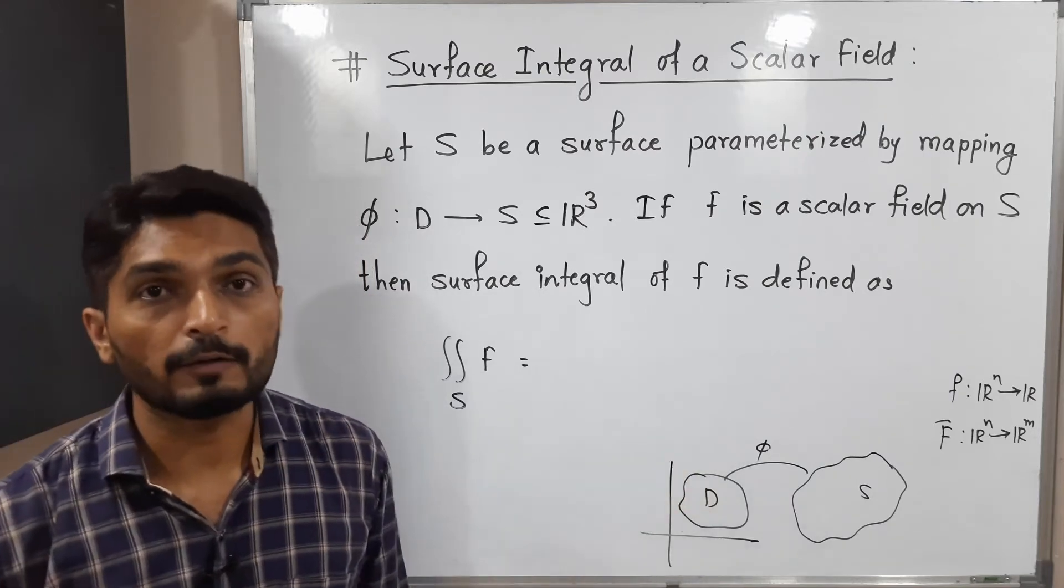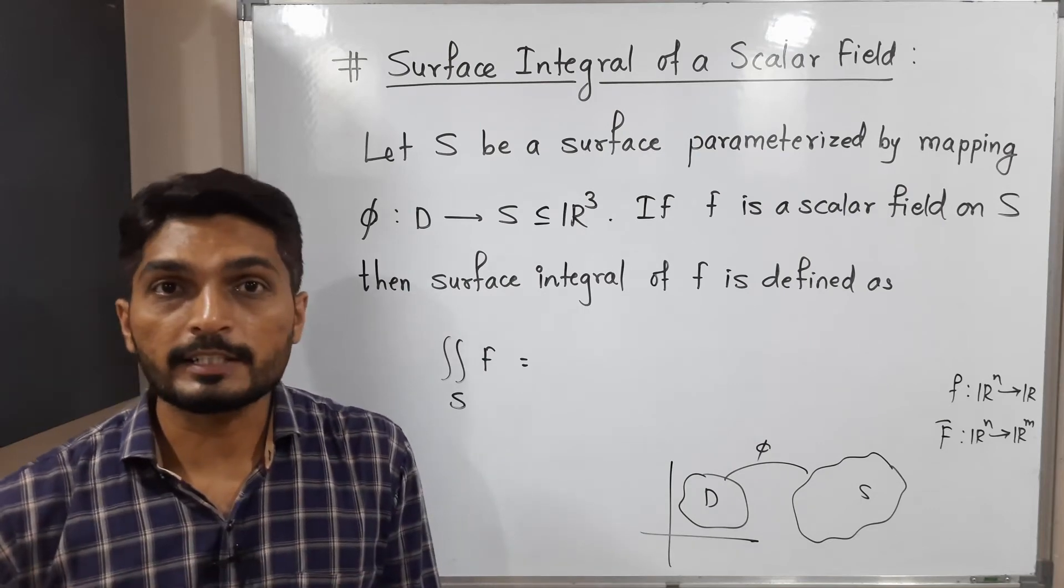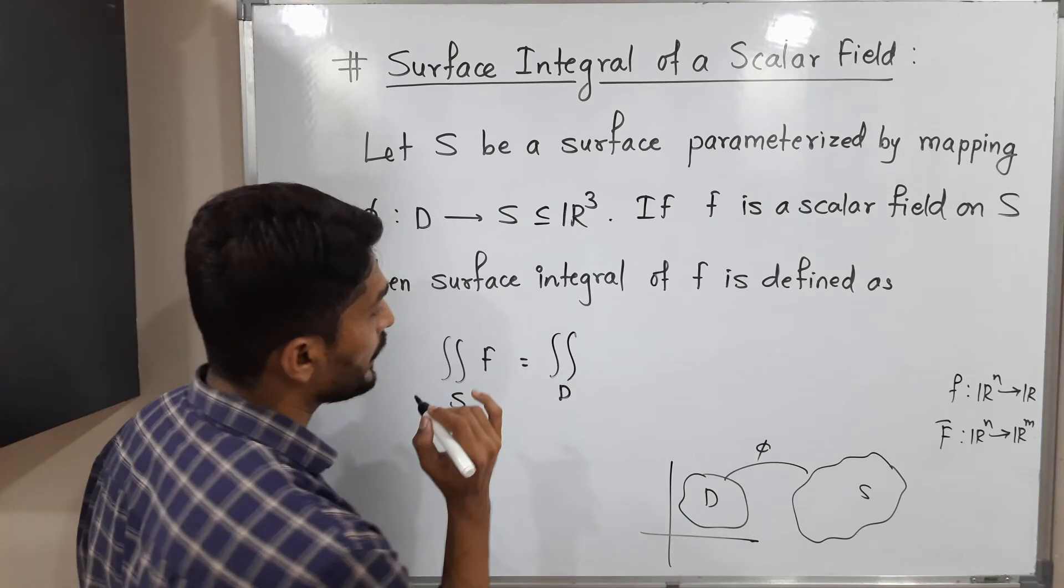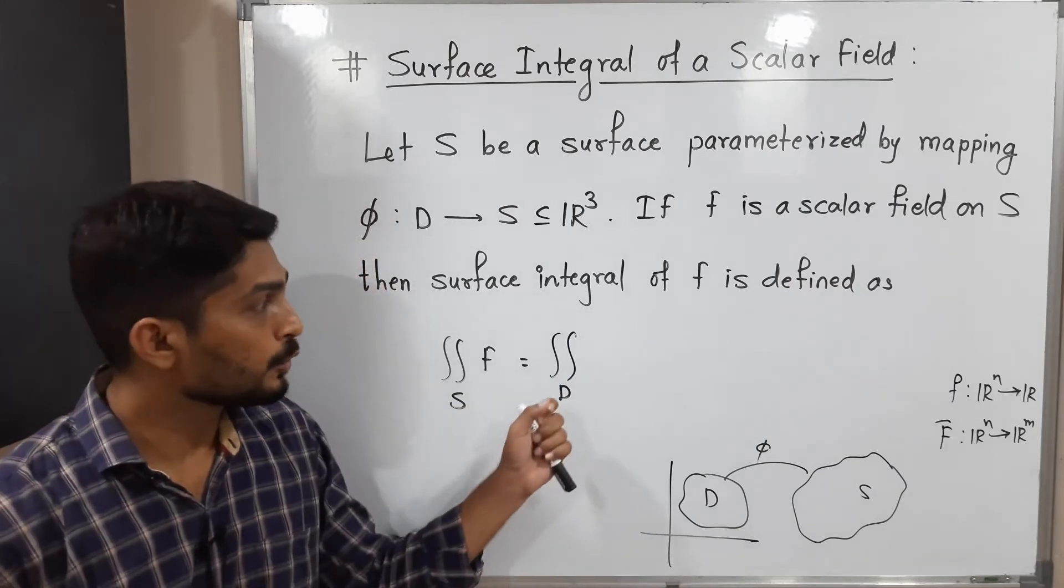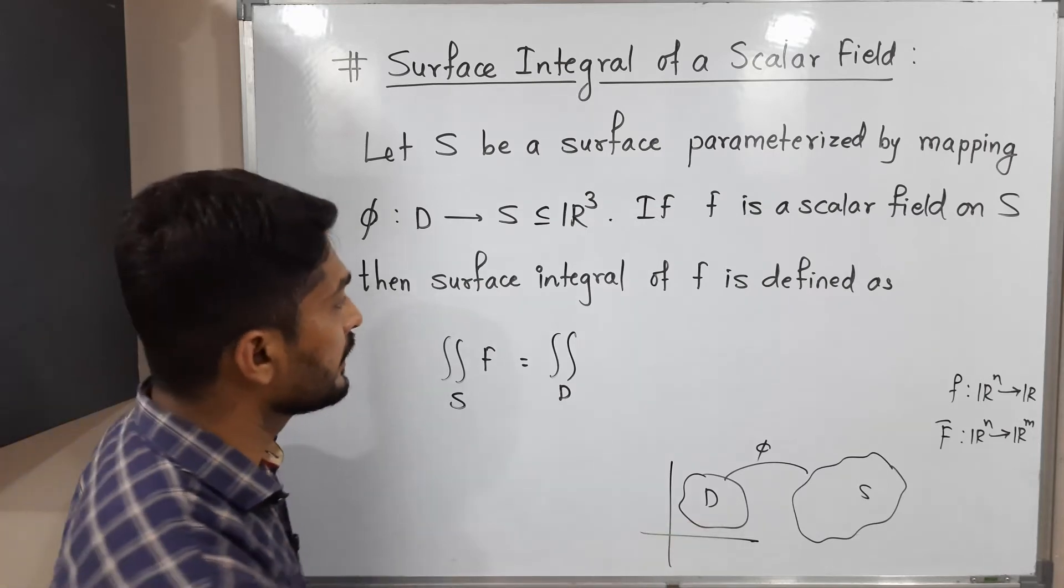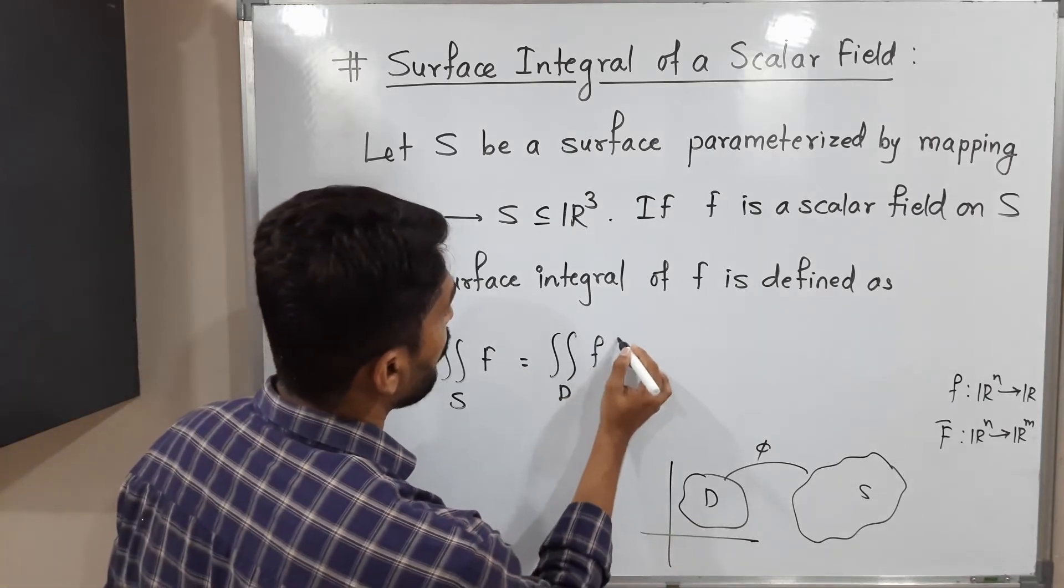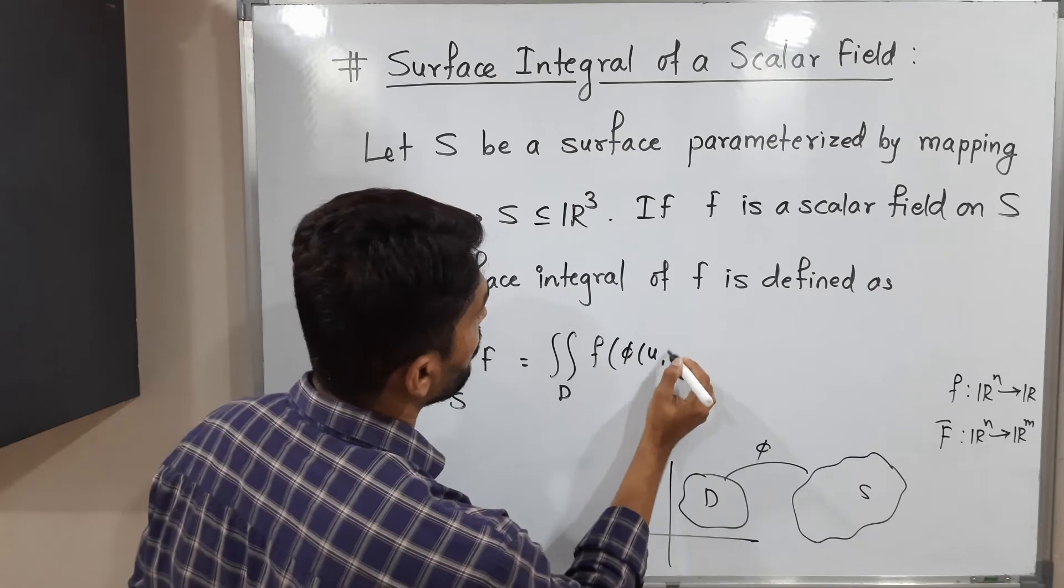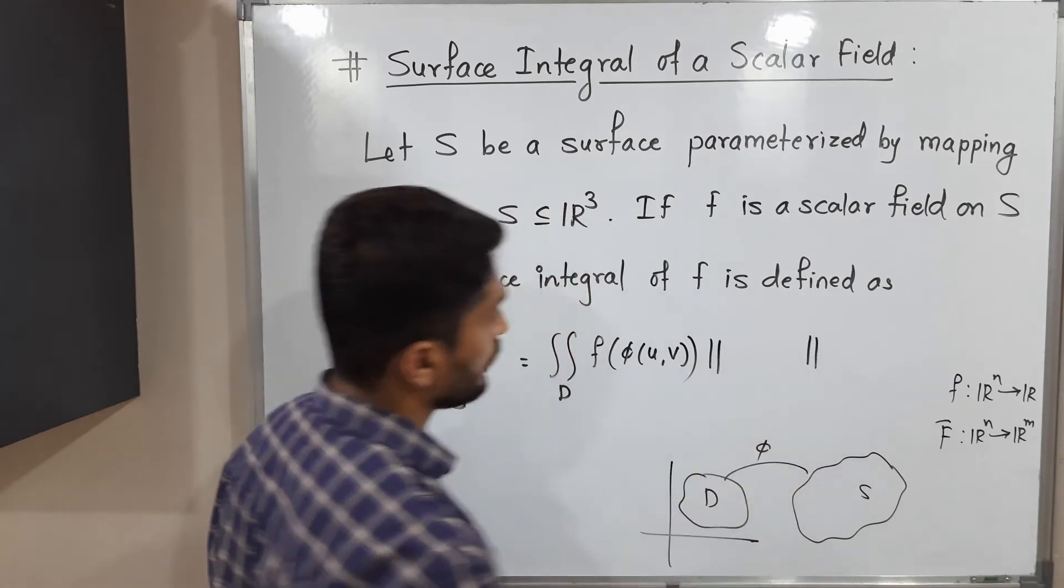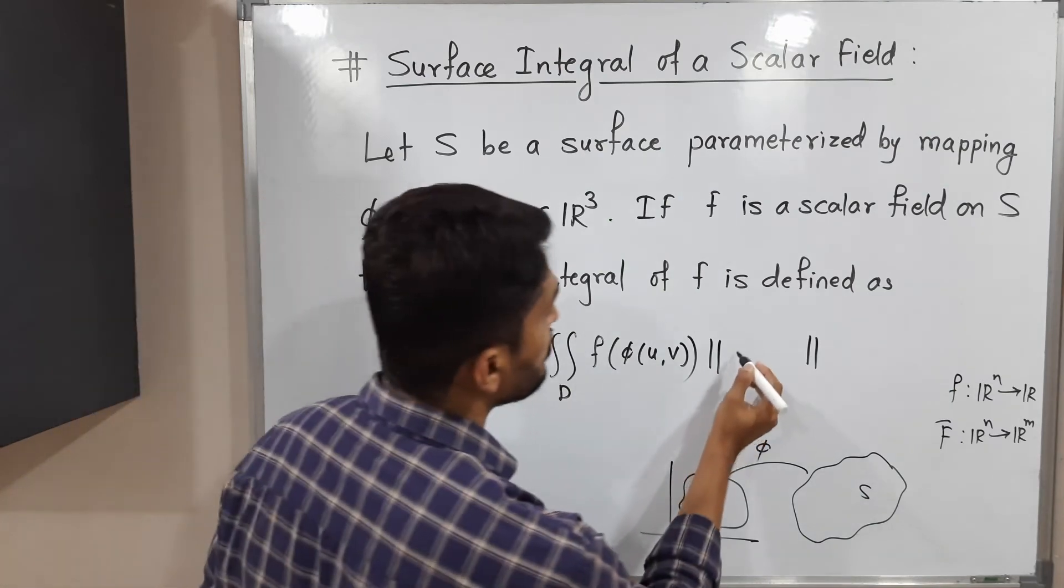the help of that parameterization φ, we define surface integral of a scalar field as double integration over D. That means we solve that double integration over that domain D of parameterization φ. It is defined as f of φ(u,v), we take a norm. So what is norm? Norm is norm of